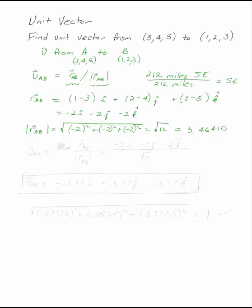The unit vector uab is the position vector divided by its magnitude. So I have minus 2i minus 2j minus 2k all divided by the square root of 12. So uab, the unit vector along this line is minus 0.577i minus 0.577j minus 0.577k.